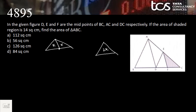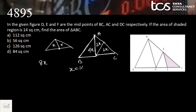Looking at ADC, DE is the median and EDC is 2x, so this area also becomes 2x. Similarly, if the entire area is 4x, area of ABD will also equal 4x. Therefore area of triangle ABC is 4x + 2x + 2x = 8x. Since x equals 14 square centimeters, 8x is 8 × 14 = 112 square centimeters. Option A is the answer.